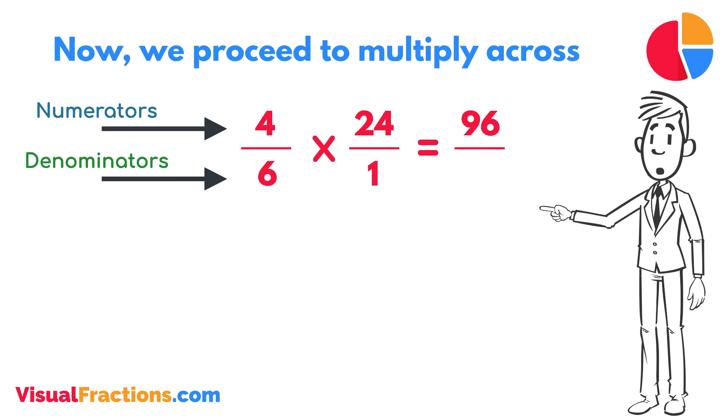Next, multiply the denominators: 1 times 6 equals 6. We now have a new fraction, 96 sixths.